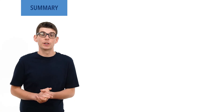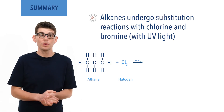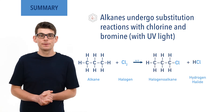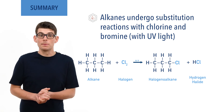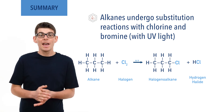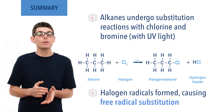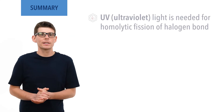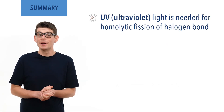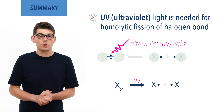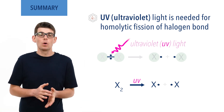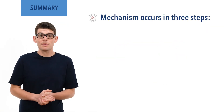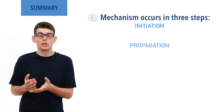To summarise: alkanes can undergo substitution reactions with chlorine and bromine in the presence of UV light, forming a halogenoalkane and hydrogen halide. Chlorine or bromine molecules break apart by homolytic fission and the halogen radicals formed react with an alkane in a free radical substitution reaction. Ultraviolet light conditions are needed to provide the energy to homolytically break the bond in the halogen and make sure each bonded atom ends up with one unpaired electron. The reaction mechanism occurs in a series of steps described as initiation, propagation, and termination.